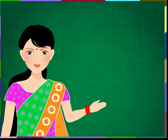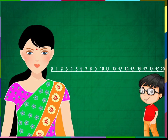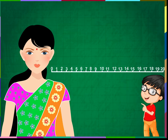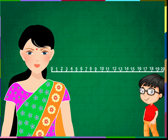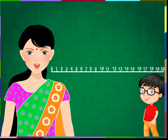We have already done number line addition with very small numbers. Now we are going to learn the same with bigger numbers. A straight line with numbers starting from zero in equal gaps is called a number line. Observe the number line given on the screen — it has numbers from zero to twenty.